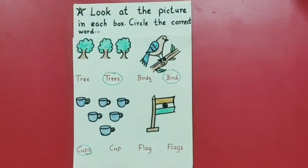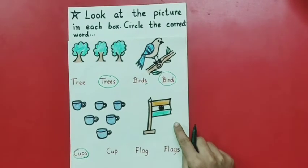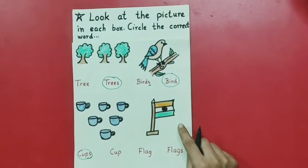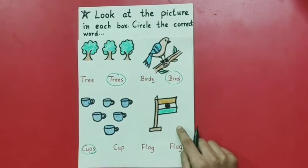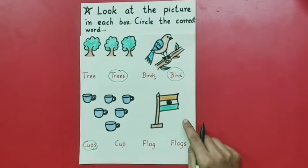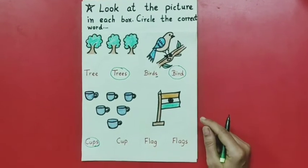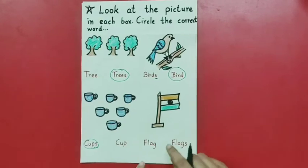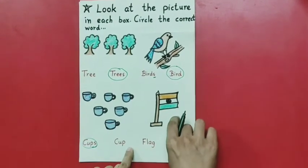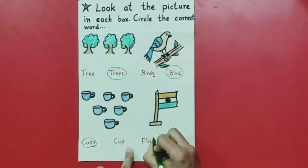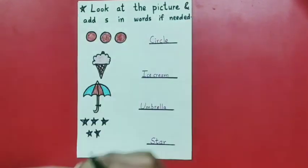Now moving to next — this is a picture of a flag. You celebrate 15th August with a flag. Here there is only one flag. So we will circle the spelling in which 'S' is not added. You can see: flag, flag. Here only one is there, so we circle the spelling of 'flag'.